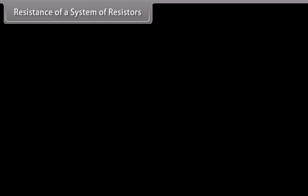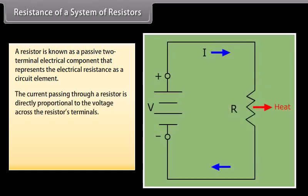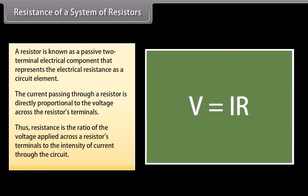Resistance of a system of resistors. A resistor is known as a passive two-terminal electrical component that represents the electrical resistance as a circuit element. The current passing through a resistor is directly proportional to the voltage across the resistor's terminals. Thus, resistance is the ratio of the voltage applied across a resistor's terminals to the intensity of current through the circuit.